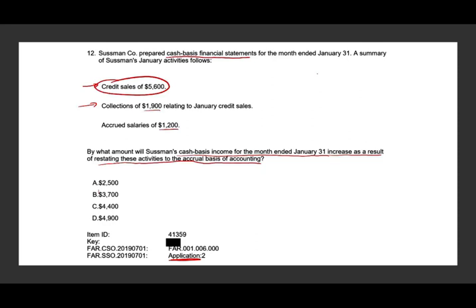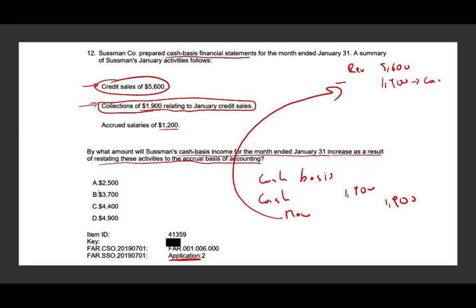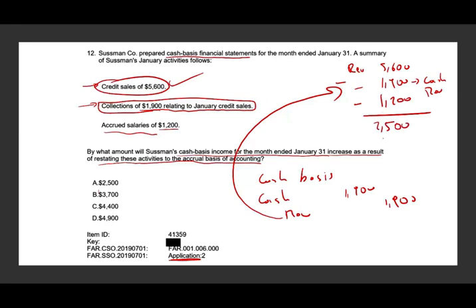For the credit sales, we have revenue of 5,600. Now, collection of 1,900 relating to January credit sales — under the cash basis, we debited cash 1,900 and credited revenue 1,900. If we're converting to accrual, we have to remove this 1,900 cash revenue, which is not really revenue under the accrual basis. We also have accrued salaries of 1,200, which is an expense. So we take 5,600 minus 1,900 minus 1,200, giving us net income of 2,500.